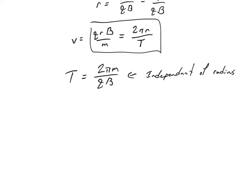Once I know the period t, I can solve for things like the frequency of orbit. So frequency is 1 over the period. So that's just going to be qb over 2 pi m.